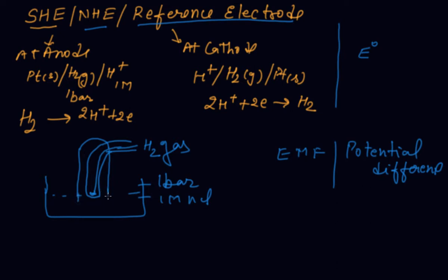The setup includes a platinum wire, glass jacket, and finely divided platinum wire, so we can check that the cell is working properly. This platinum-coated standard hydrogen electrode is used to check the electrode potential of a particular metal. The reference electrode — SHE — helps in determining electrode potential. Hydrogen gas at one bar pressure is passed through one molar HCl solution at 298 Kelvin temperature.